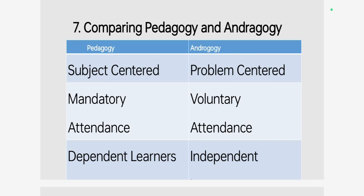Regarding attendance, in pedagogy there is concrete, tangible attendance — students should come to school regularly. But in the case of andragogy, in adult learning, attendance may be flexible. Learners are dependent in pedagogy, while in adult learning they are independent.